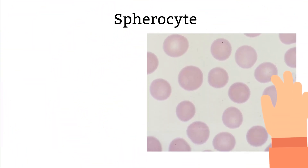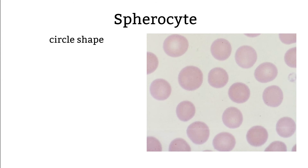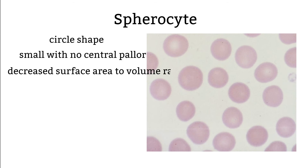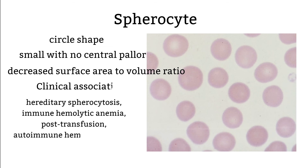Spherocyte. Spherocyte is used to describe a red blood cell that is in a circle shape. It is irreversible, trapped by the spleen, and removed from circulation. The cells are small with no pallor zone in the center. Spherocytes may occur as part of the normal aging process of red blood cells. Here are some conditions where you can see spherocytes in the patient's peripheral blood smear.